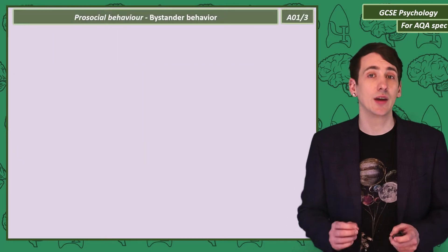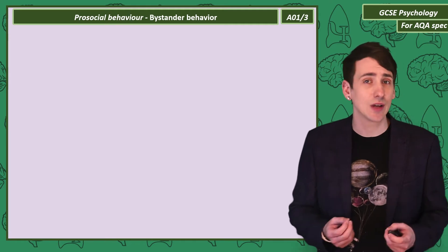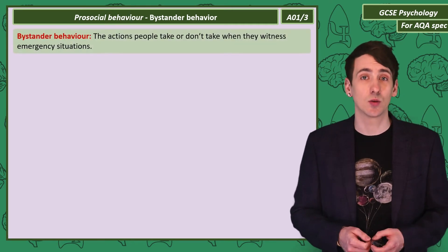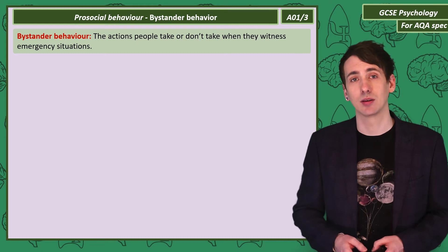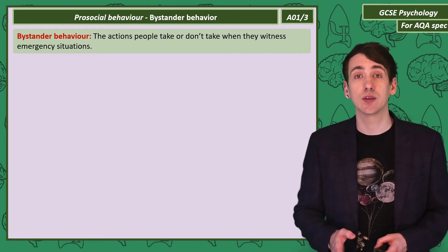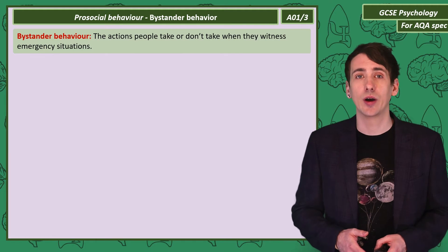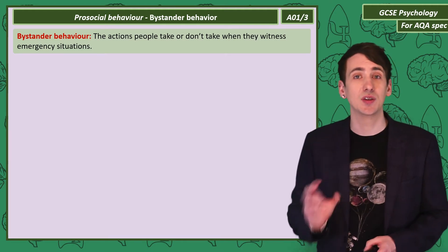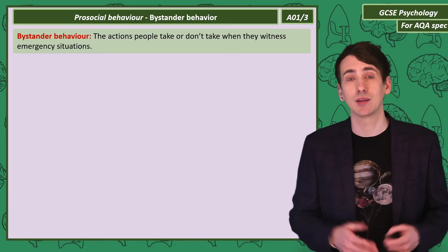Psychologists are interested in the actions people do or don't take when they witness an emergency situation. This is called bystander behaviour. In what you'll notice is a bit of a pattern in these social influence videos, we're going to consider social and dispositional factors surrounding bystander behaviour.